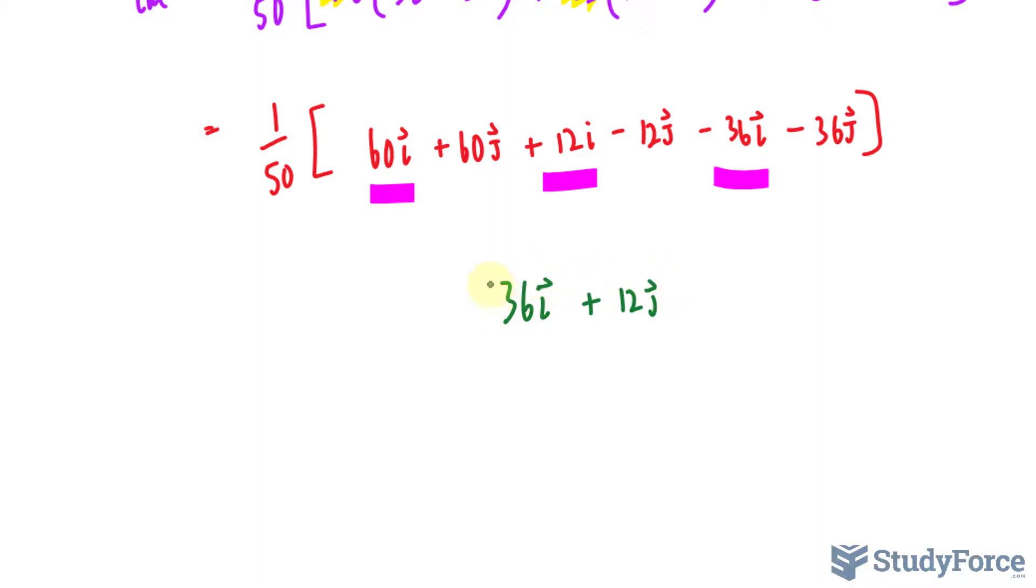And again, I forgot the arrow, I put it back, 1 over 50. We will multiply 1 over 50 to each of these, much the same way we did above, giving us 36 over 50i, plus 12 over 50j.